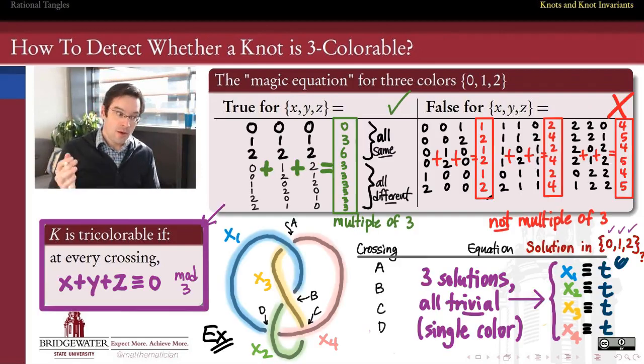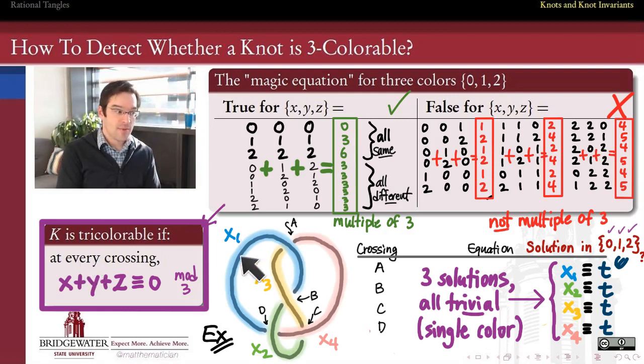In our previous video, we saw that the figure eight knot was not tricolorable, at least not in any interesting way. Because when we built a system of four equations, four modular equations mod three, using the magic equation at each of the four crossings of this diagram, we got a four by four system that has solutions, but all of its solutions were trivial.